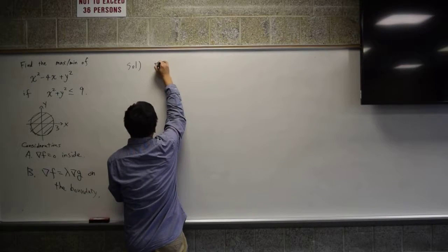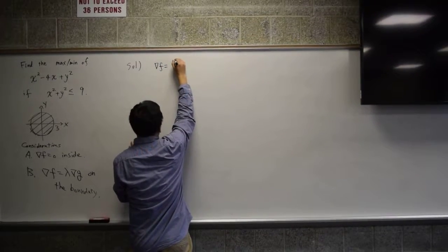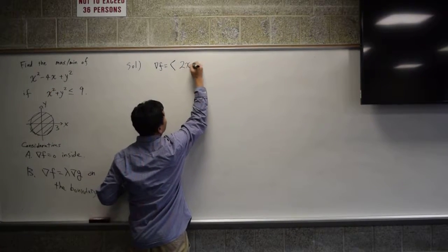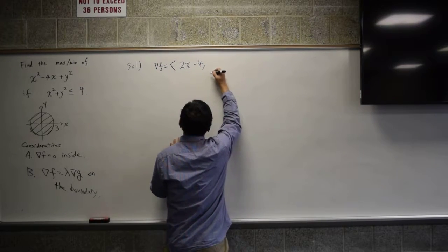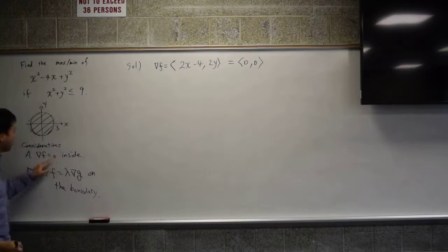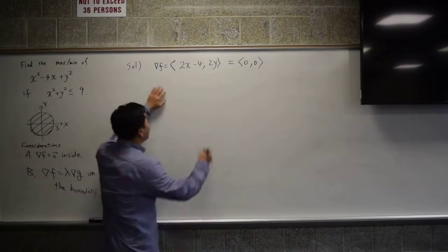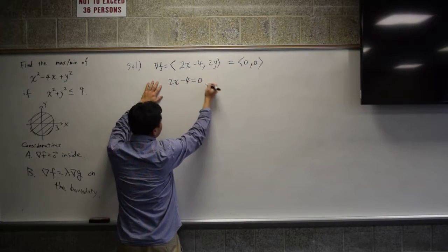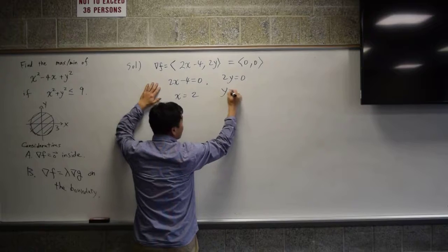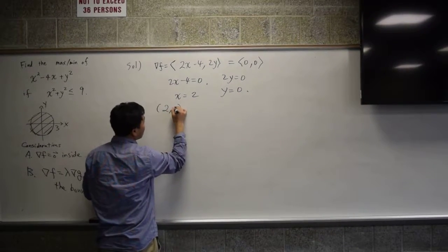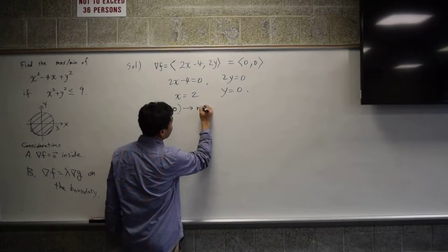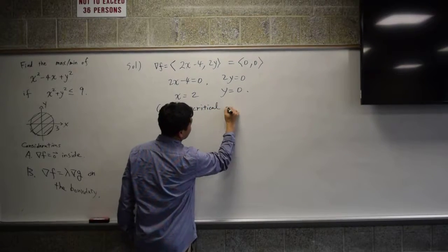First, let's find the gradient of f. Differentiate this by x, you get 2x minus 4. Differentiate this by y, you get 2y. Now when is this equal to zero? And by the way, this is zero as a vector, so it's zero comma zero. So you have 2x minus 4 equal to zero, and 2y equal to zero. So x is 2, y is 0. So you have 2 comma 0 as your critical point inside the domain.